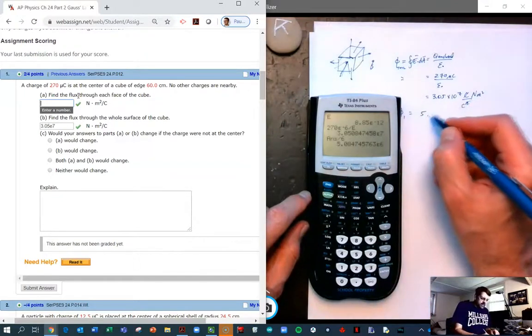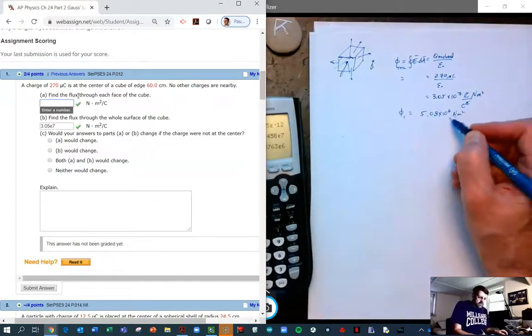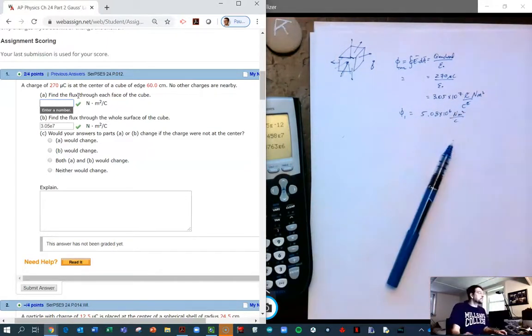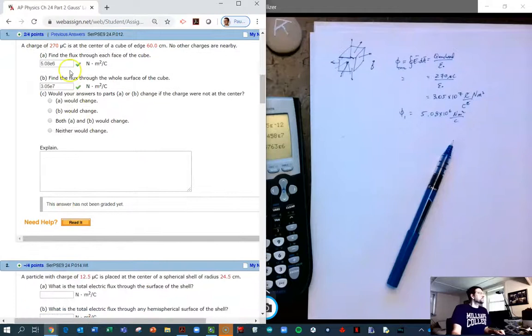And that's going to be 5.08 times 10 to the 6. Again, newton meter squared over coulombs. And 5.08 E6. And if we check those answers, lo and behold, they're right.